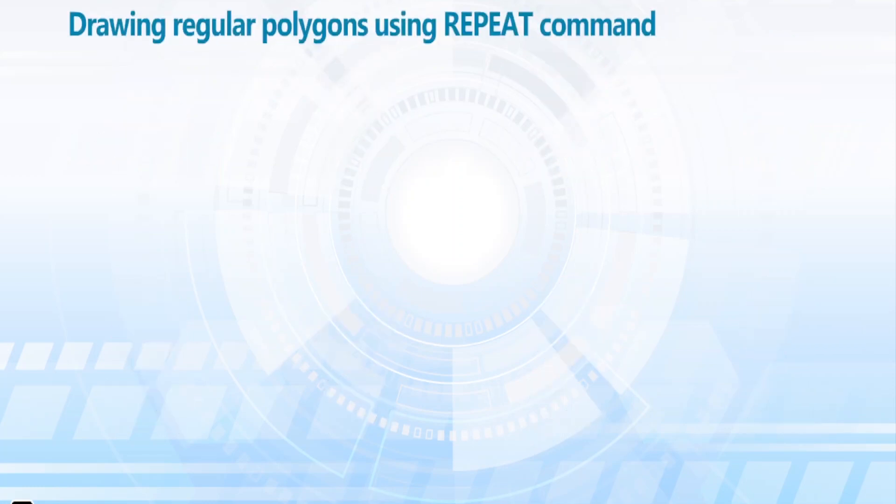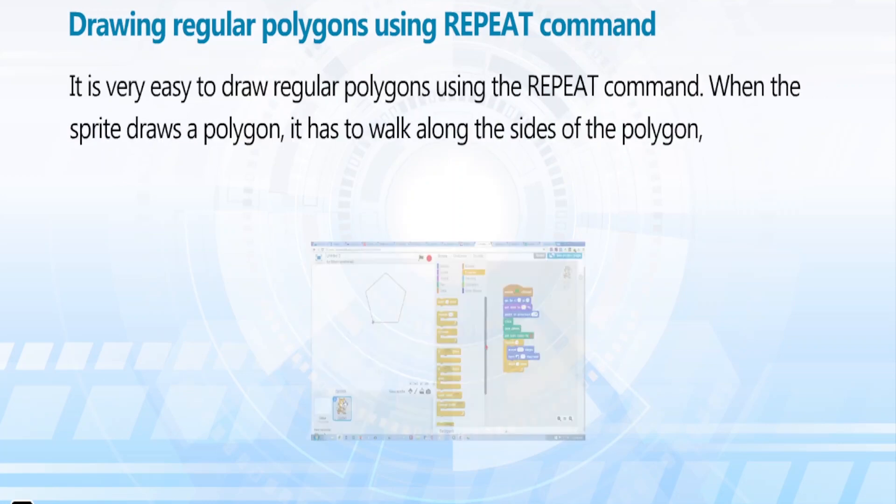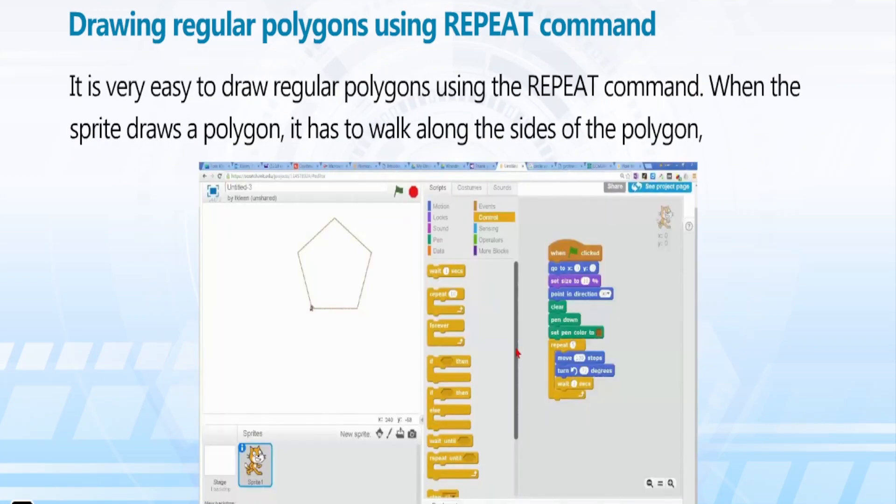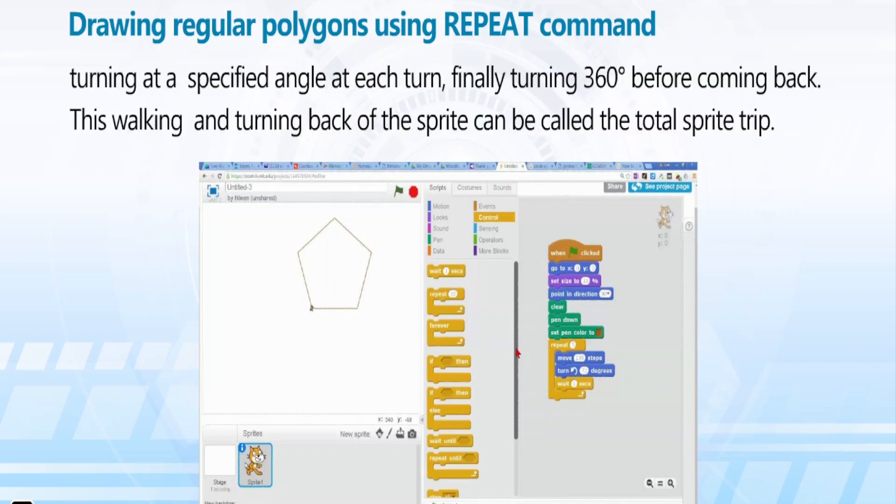Drawing regular polygons using repeat command. It is very easy to draw regular polygons using the repeat command. When the sprite draws a polygon, it has to walk along the sides of the polygon, turning at a specified angle at each turn, finally turning 360 degrees before coming back. This walking and turning back of the sprite can be called the total sprite trip.